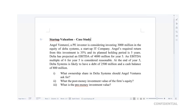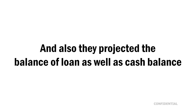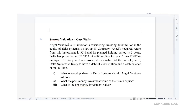An EBITDA multiple of six for the fifth year is considered reasonable. They have also projected a debt balance of 2,500 million that they expect the company will be carrying, and a cash balance of around 800 million in the fifth year.